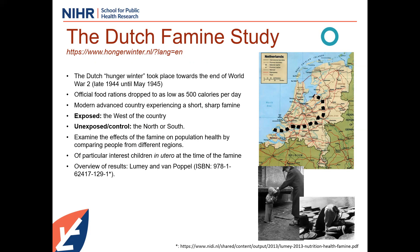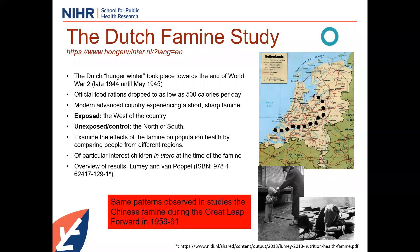They were particularly interested in children in utero at the time of the famine. One important aspect of natural experiments is getting similar results from similar kinds of events. They also looked at the Chinese famine during the Great Leap Forward in the 1950s–1960s and found the same kind of impacts on development and health, which tells you a lot about what these famine events do in terms of health, mental health, and development.